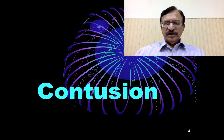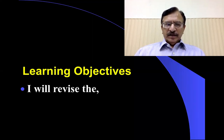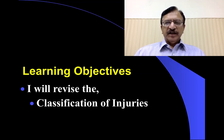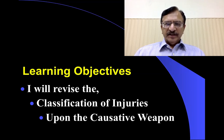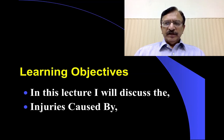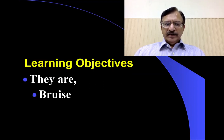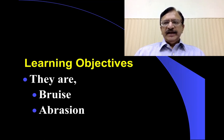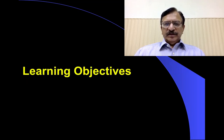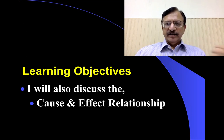I will start my discussion on injuries caused by blunt weapons, and this will be the first lecture on contusion or bruise. The learning objective of this lecture will be to revise the classification of injuries, and the most important classification is the one based on the causative agent. I will discuss the injuries caused by blunt force, blunt object, or blunt weapon — bruise, abrasion, and laceration — and also the cause and effect relationship.